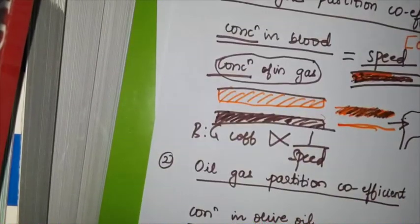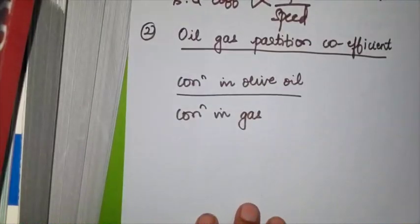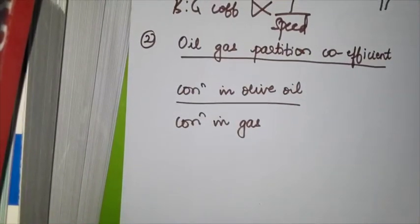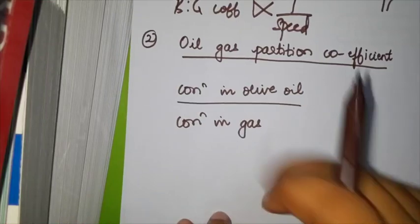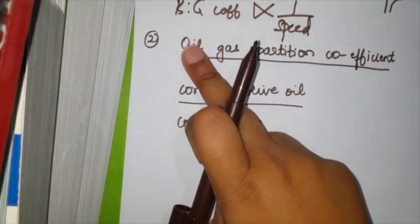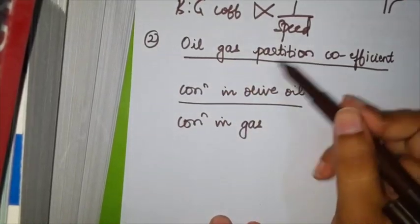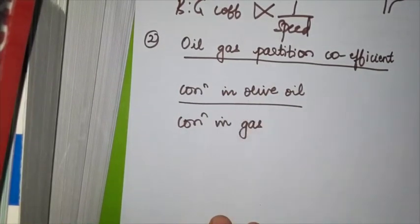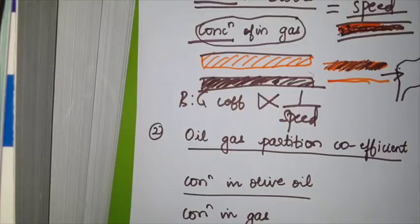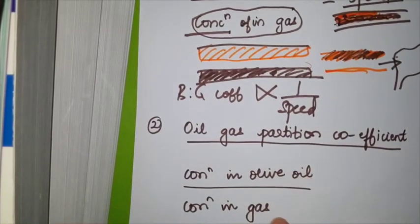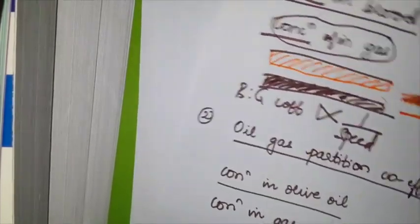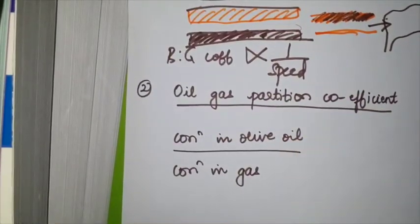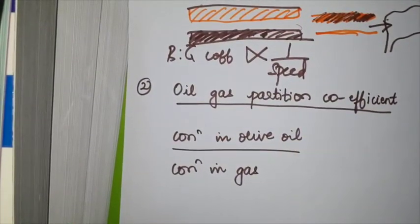So now I'll go to the second part — oil-gas partition coefficient. What is it? We'll derive it by the name of the definition. Concentration in oil divided by concentration in gas. They have chosen olive oil as the standard, so concentration in olive oil divided by concentration in gas. Olive oil is obviously an example of a lipid, so by knowing the concentration in a lipid, you're able to judge its lipid solubility.